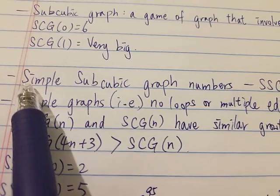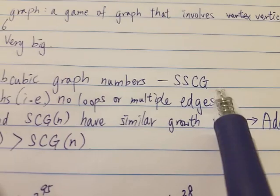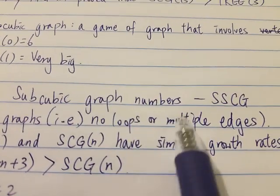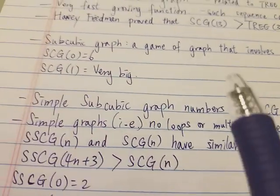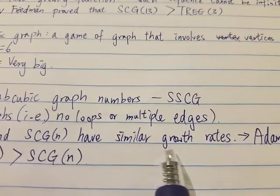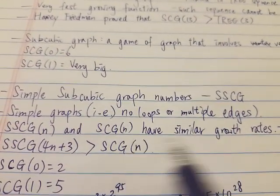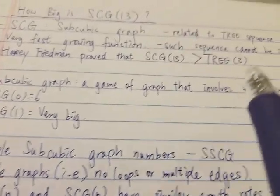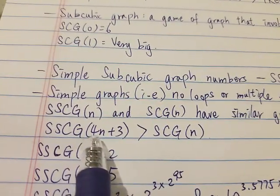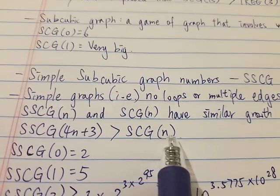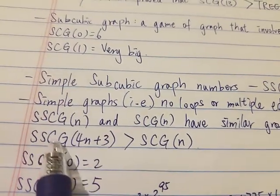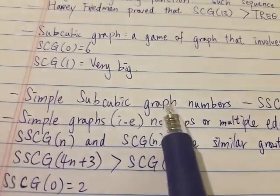We also have something called the Simple Subcubic Graph Numbers, also known as SSCG. A simple graph has no loops and no multiple edges. It has been proved that SSCG and SCG have very similar growth rates — they grow around the same rate, both much faster than TREE(3). It is also shown that SSCG(4n+3) is bigger than SCG(n).